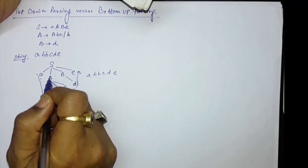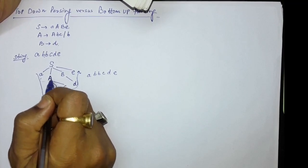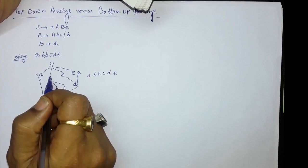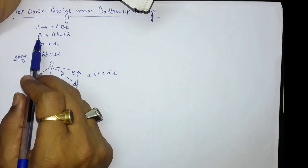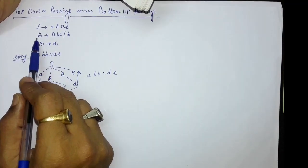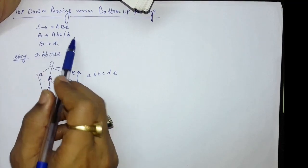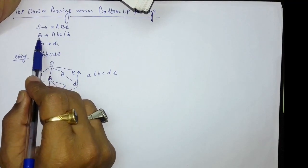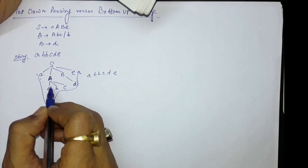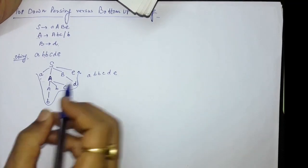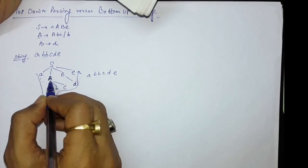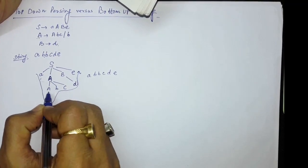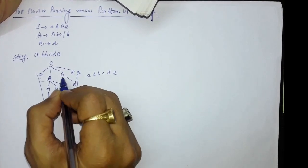In the case of derivation, a non-terminal is taken and the production starting with that non-terminal is identified. We look at the right-hand side of that production and replace the non-terminal with that right-hand side. We do this one by one — first for capital S, then for capital A, then for capital B.